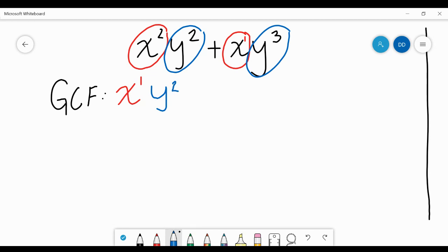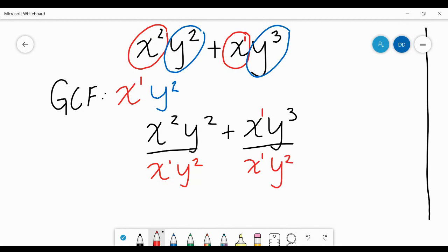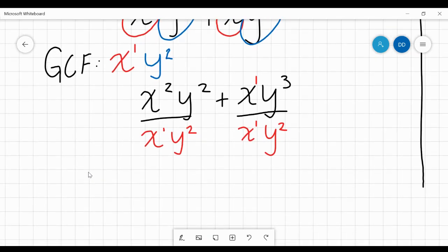It's the two variables that have the smaller exponents. So what we're gonna do is take X squared Y squared plus XY to the third and do the same thing that we have been doing. We're going to divide by the GCF. I'm gonna put that one in so it makes it a little easier when we are subtracting exponents.